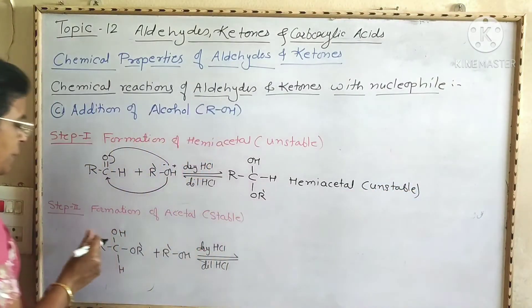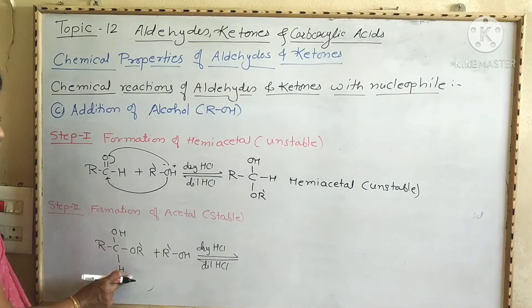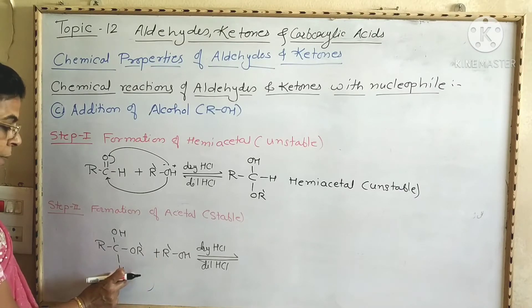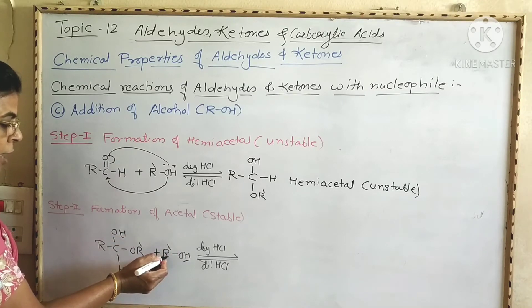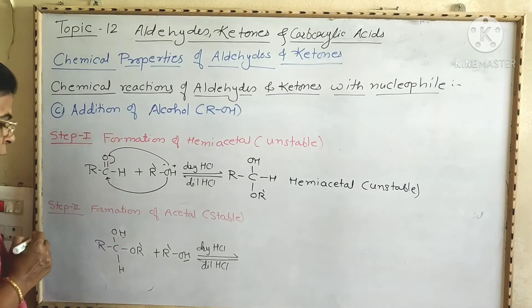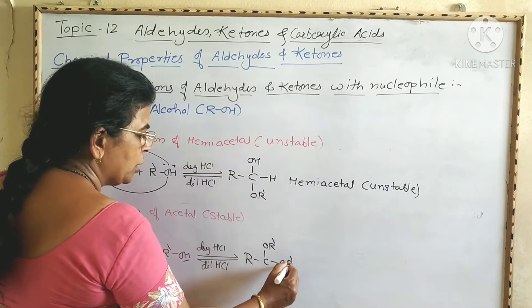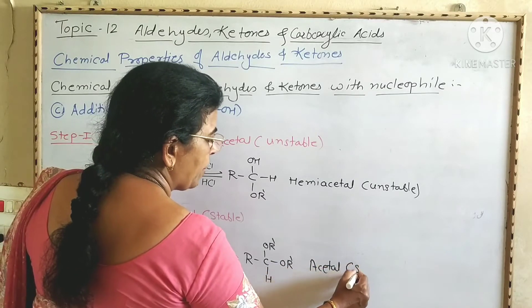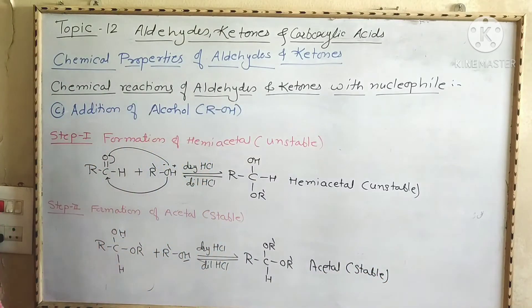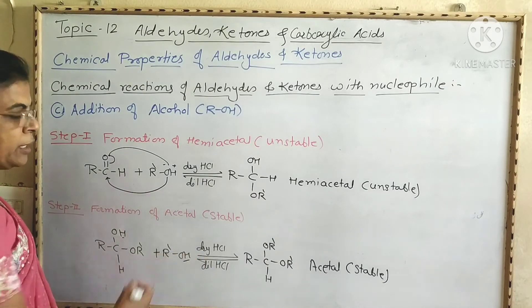In the second step, a second molecule of alcohol is added. This alcohol reacts with the hemiacetal and removal of H₂O takes place — this hydrogen and this OH are removed — and the OR' group is replaced by the hydrogen atom to form R-C(OR')(H)-OR'. This is the acetal, which is a stable compound. This reaction is carried out in the presence of dry HCl or dry acid. If the reaction is carried out with dilute HCl, then a reversible reaction occurs.